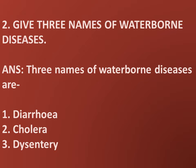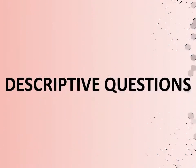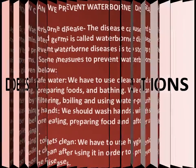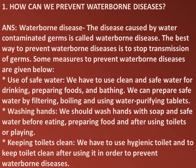Number two: Give three names of waterborne diseases. Three names of waterborne diseases are: number one, diarrhea; number two, cholera; number three, dysentery. Now, descriptive questions. Number one: How can we prevent waterborne diseases?